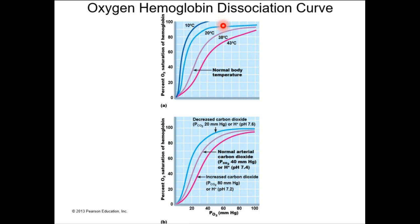Going back to the chemistry concept: when the temperature is elevated, molecules move a lot faster, so that oxygen is going to move away from hemoglobin more readily. In colder temperatures, molecules move a lot less, so oxygen is going to be bound more tightly and it's going to be less likely to move away from hemoglobin.